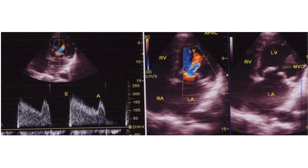A mitral valve area of 1 square centimeter corresponds to a PHT of 220 milliseconds. Hence, dividing 220 by the measured pressure half-time gives the estimated mitral valve area by PHT. In severe mitral stenosis, the slope is flat and the pressure half-time is longer, giving a smaller area by PHT.